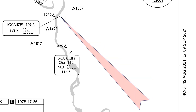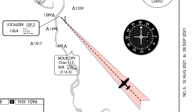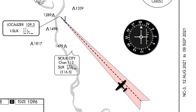This is the localizer course. An aircraft uses its onboard equipment to tell if it's to the right of the course, to the left, or on the extended centerline. Most localizers used in instrument approaches like this are aligned with the runway centerline, but there are some exceptions.